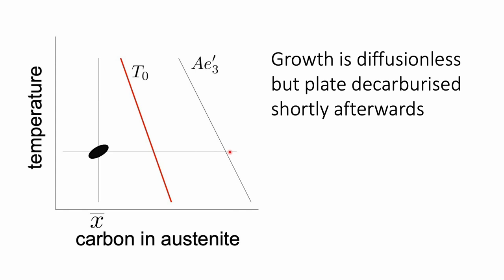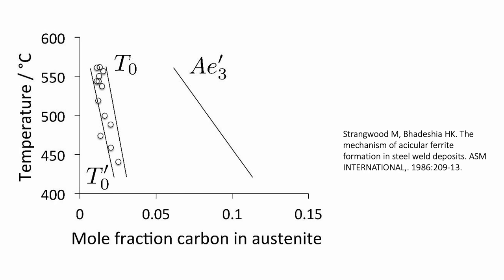By measuring the composition of the austenite at the point where the reaction stops we can decide on the role of carbon during transformation. If you look at the diagram of experimental results, you will see that the reaction stops at the T0 curve, which is far away from the A3 curve, and therefore we can conclude that the formation of acicular ferrite is diffusionless but shortly afterwards the carbon partitions into the remaining austenite.